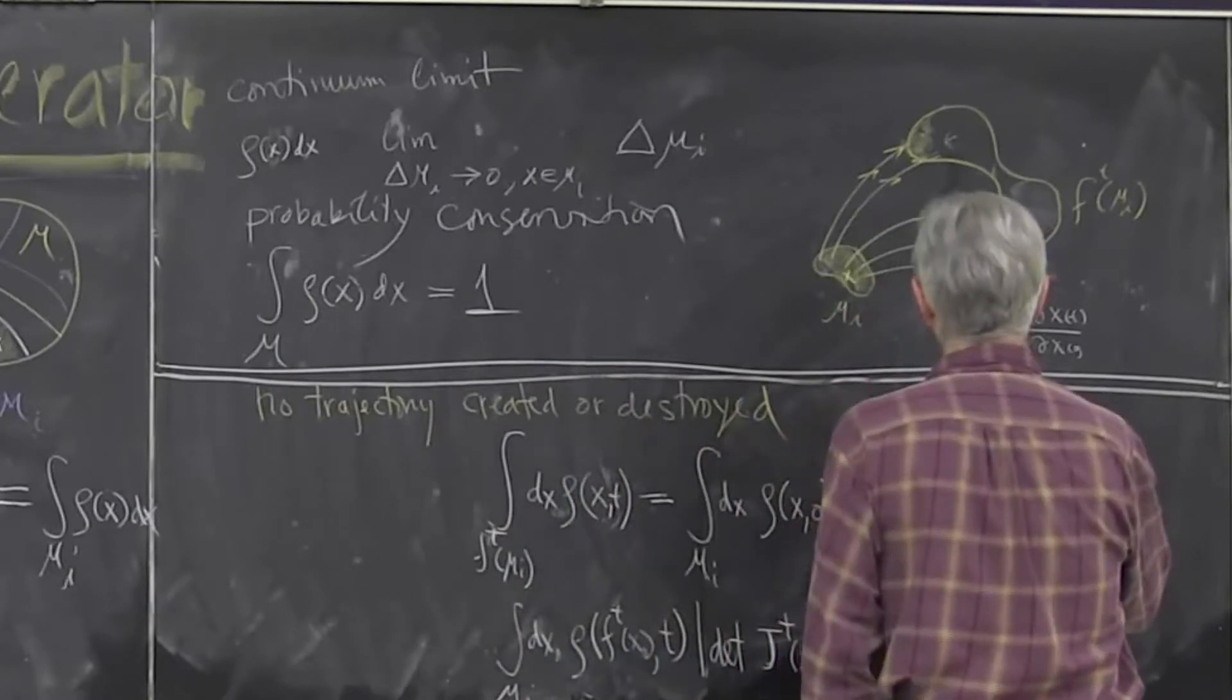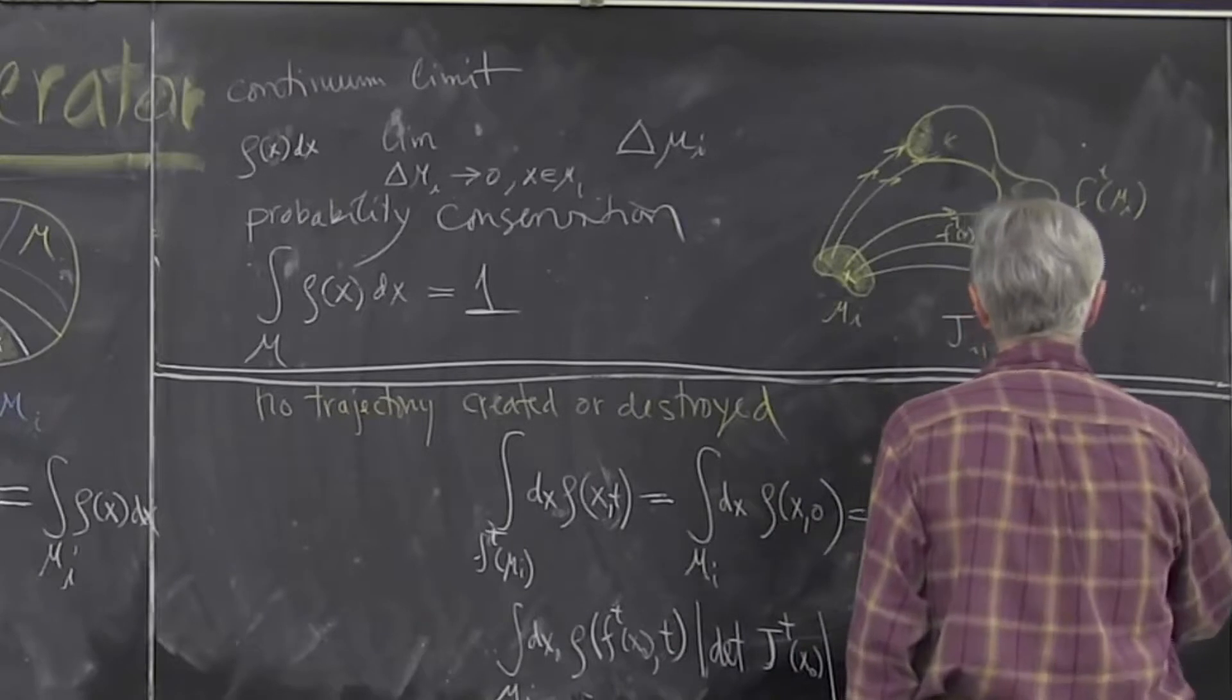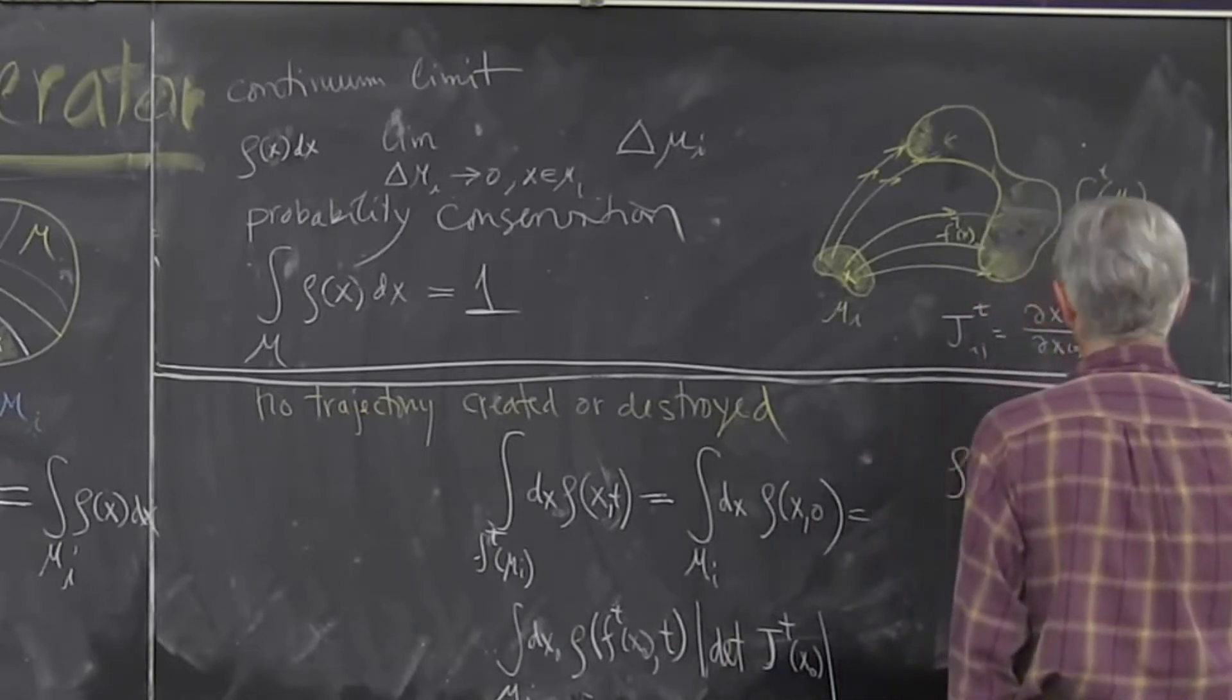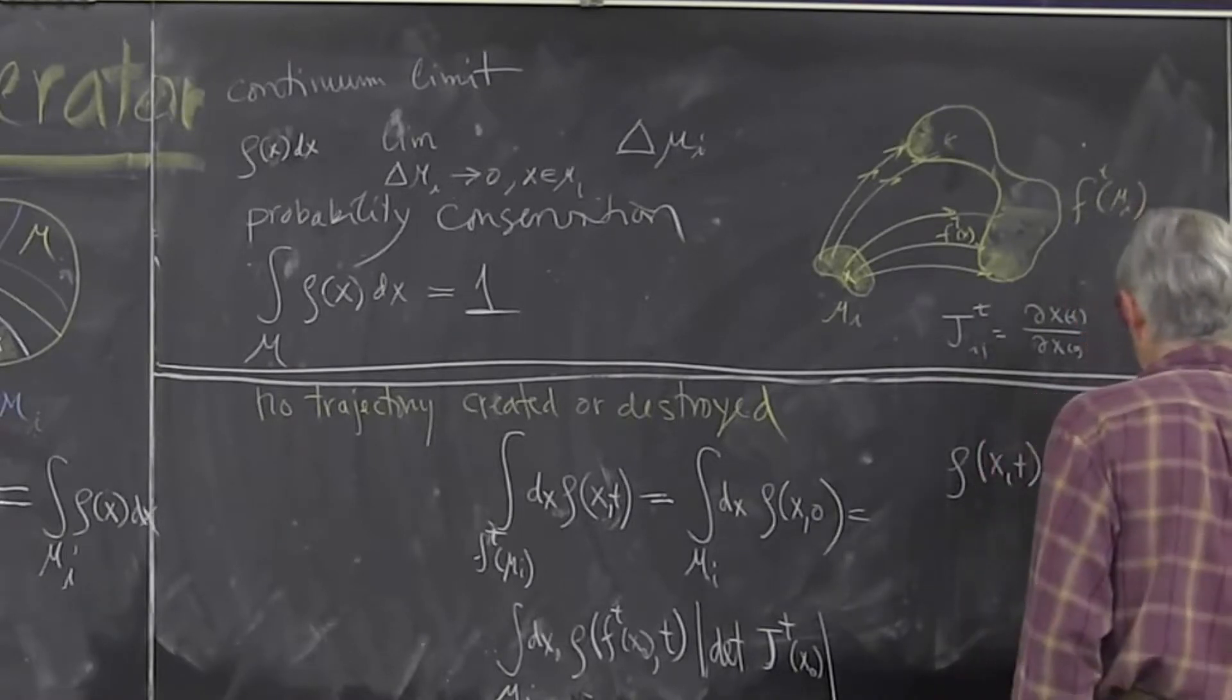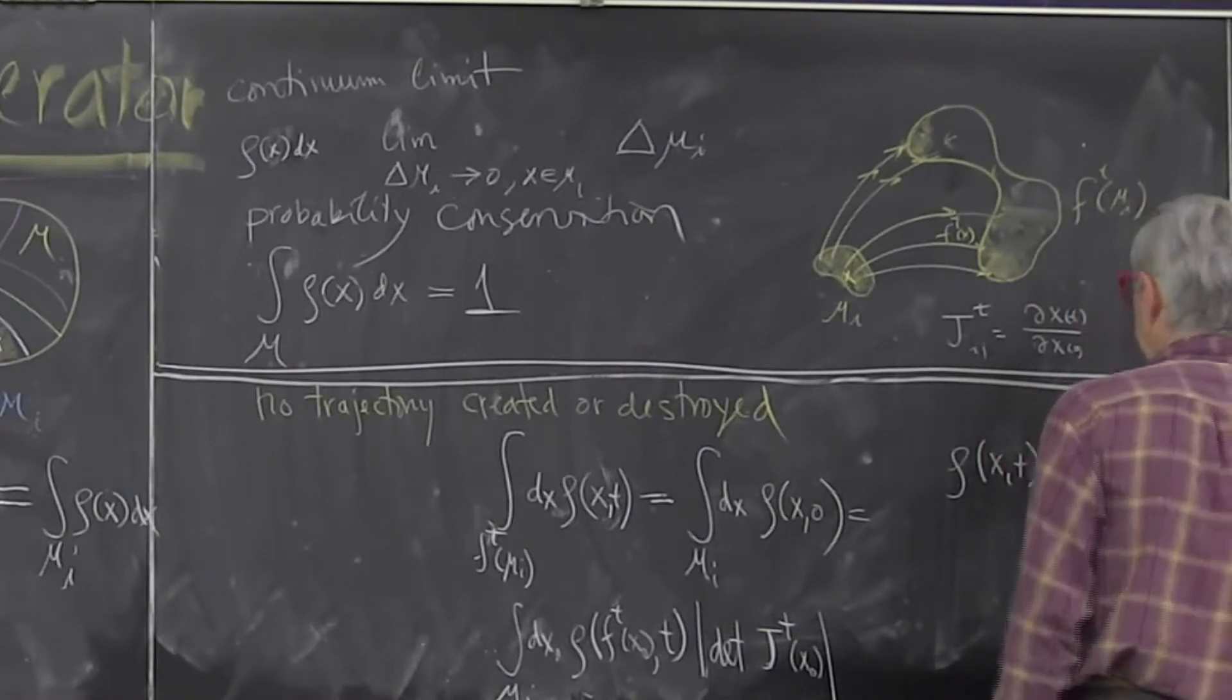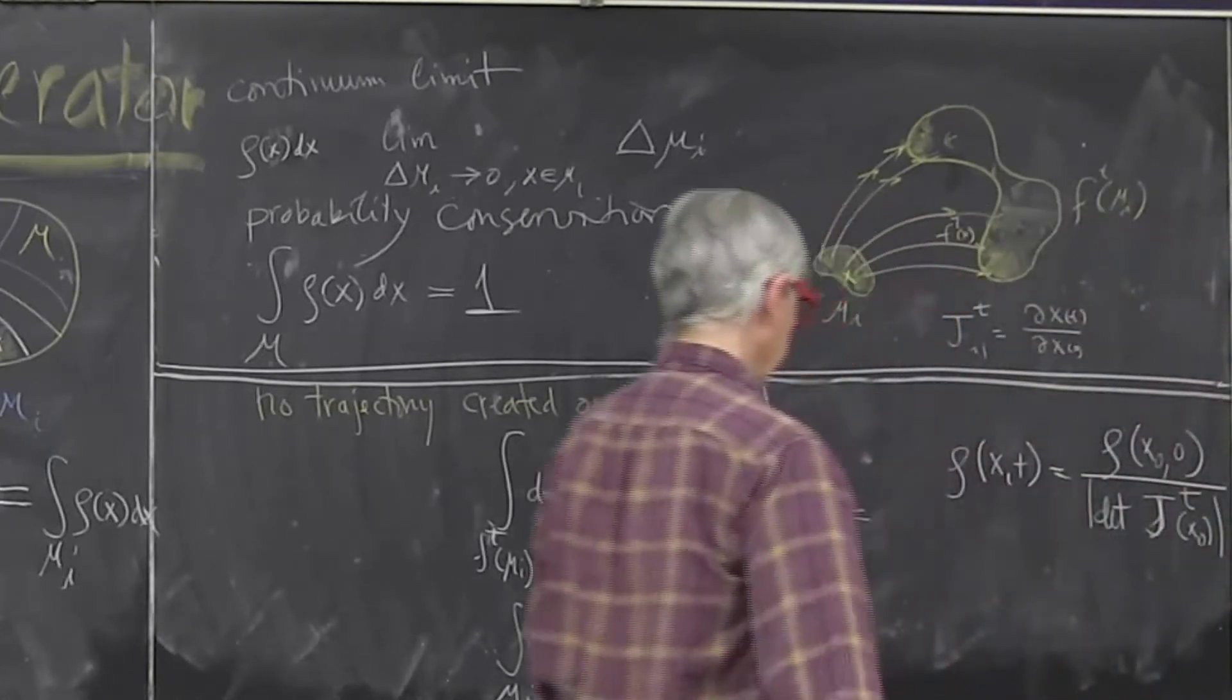So we find the transformation law for the density which says density at time t is the same thing as density at the original time but divided by the volume or determinant of the Jacobian of the transformation going from there.